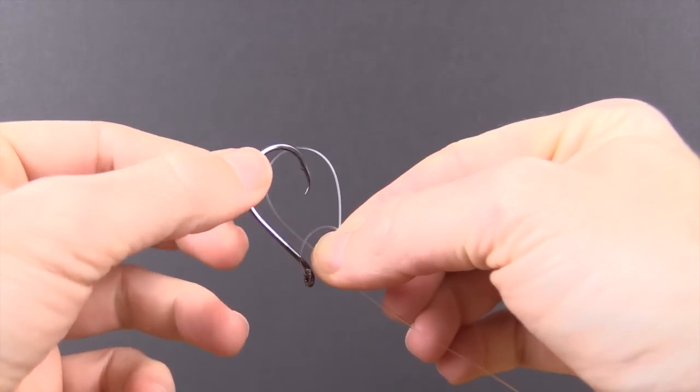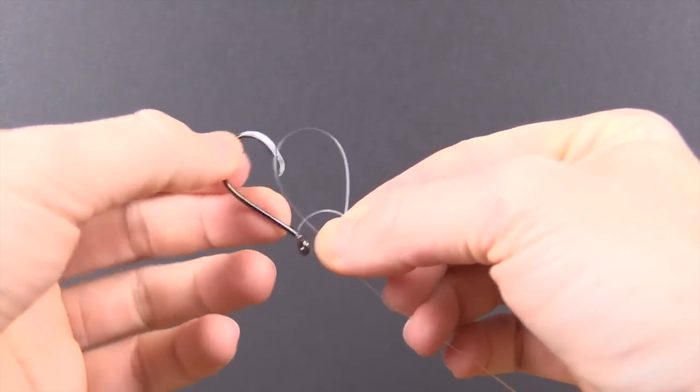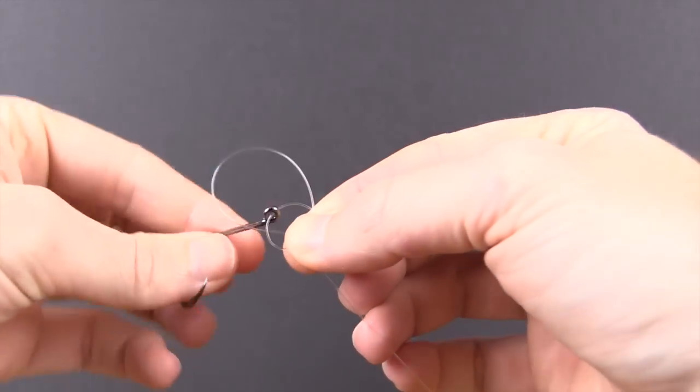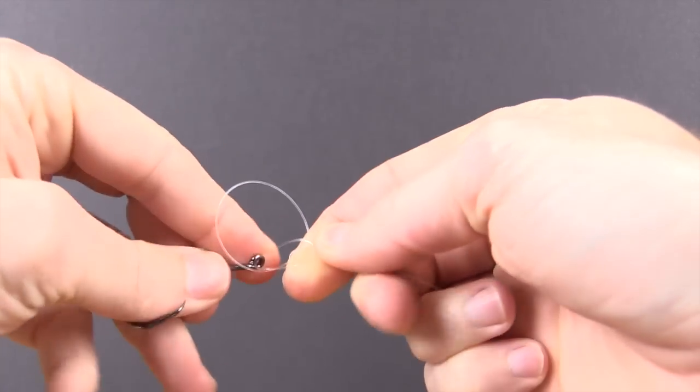So now with the hook, we're going to take the hook, which is on the second loop, through the first loop. So go from forward, behind. And that is it.